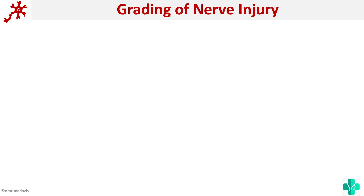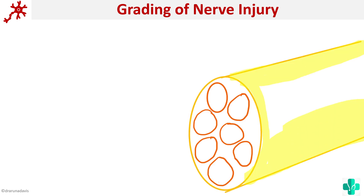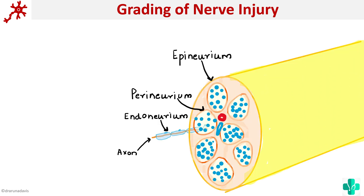We have a classification of grading of nerve injury. The basic structure of the nerve consists of the axon surrounded by the endoneurium, arranged in fascicles which are in turn surrounded by the perineurium, and a bundle of fascicles are arranged together and covered by the epineurium.